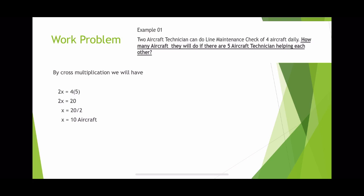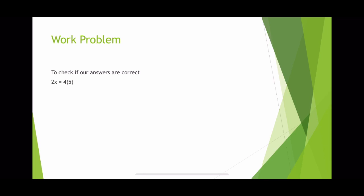Therefore, five aircraft technicians can finish 10 aircraft. To check if our answer is correct, we go back to the equation: 2X is equal to 4 multiplied by 5. Substituting the value of X, which is 10: 2 multiplied by 10 is equal to 20, and 20 is equal to 20. Therefore, our answer is correct.